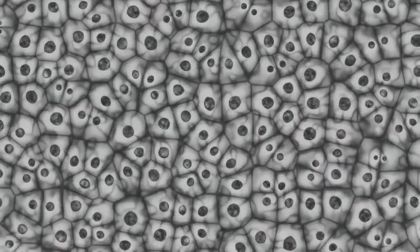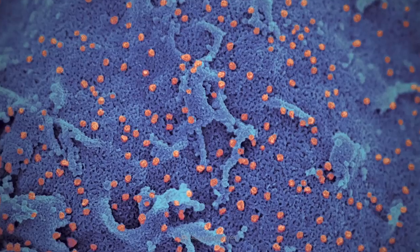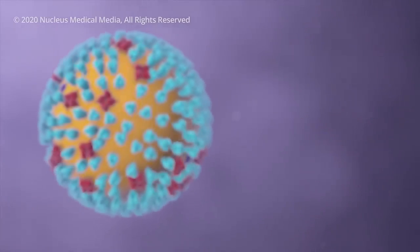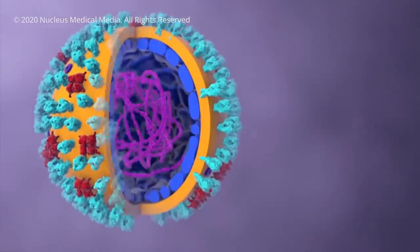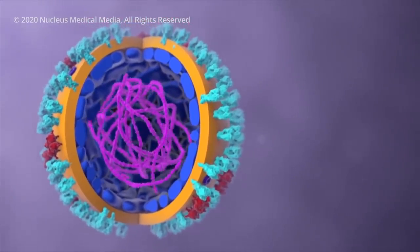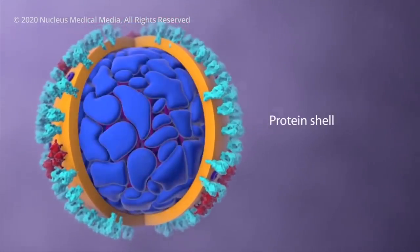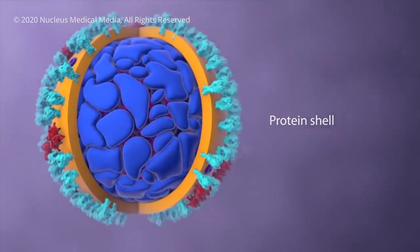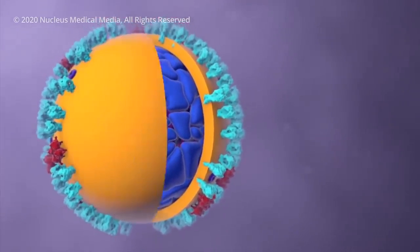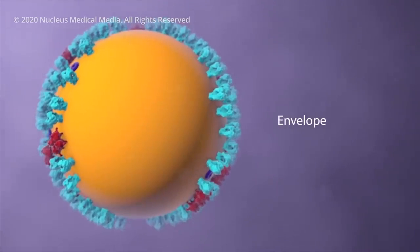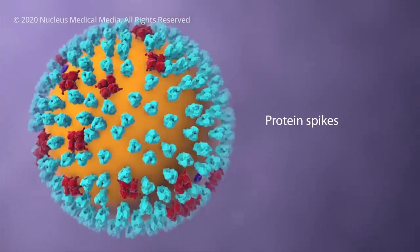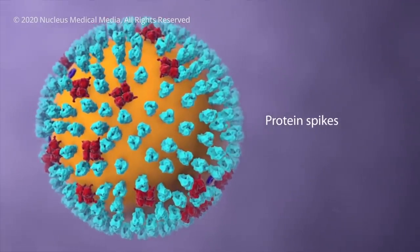The coronavirus must infect living cells in order to reproduce. Let's have a closer look. Inside the virus, genetic material contains the information to make more copies of itself. A protein shell provides a hard protective enclosure for the genetic material as the virus travels between the people it infects. An outer envelope allows the virus to infect cells by merging with the cell's outer membrane. Projecting from the envelope are spikes of protein molecules.